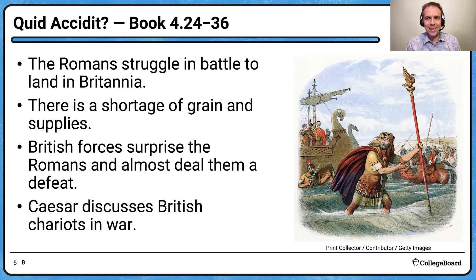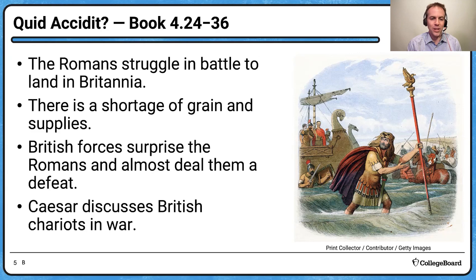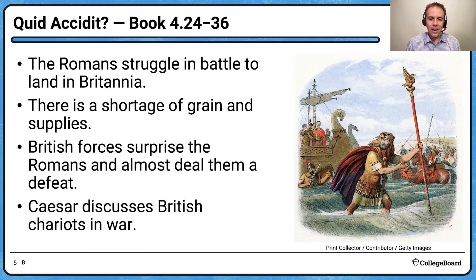Because of the shortage of grain and supplies and the small number of Roman troops, the British forces surprise the Romans and almost deal them a defeat — the thought that they could throw the Romans out of Britannia forever. Even though Caesar isn't able to maintain a foothold, over 100 years later the Romans return and set up an occupation lasting several hundred years. These chapters also include the famous description of how British chariots fight in war, which Caesar's Roman audience would find foreign and interesting.